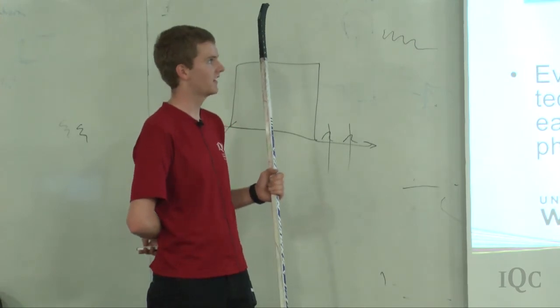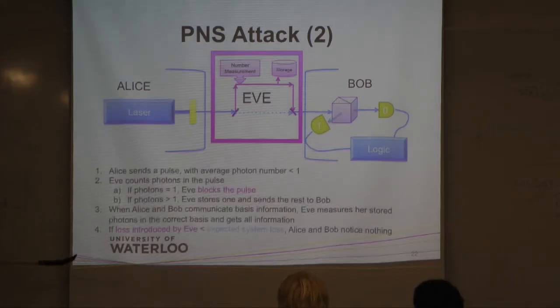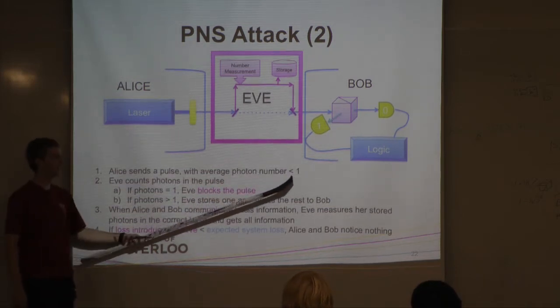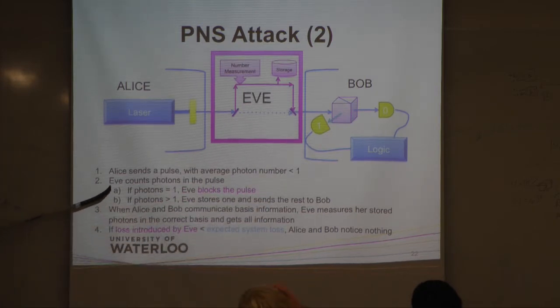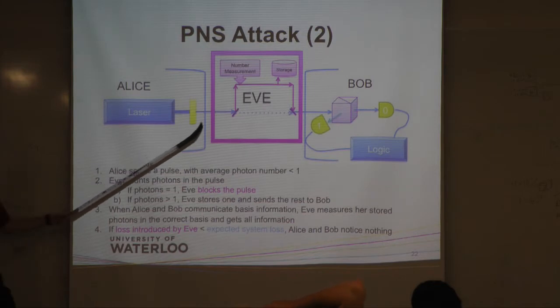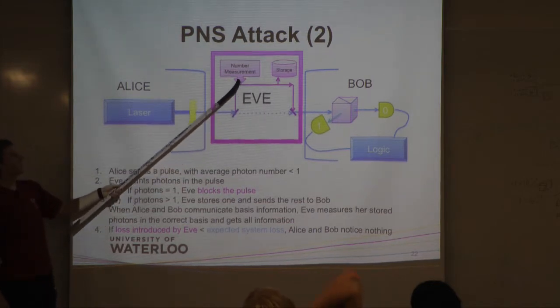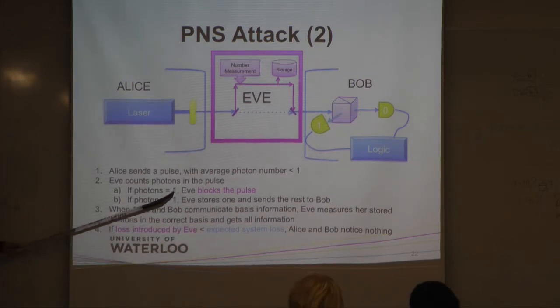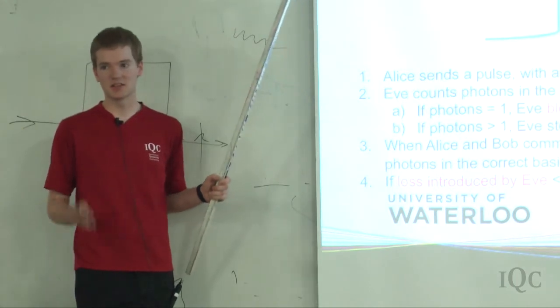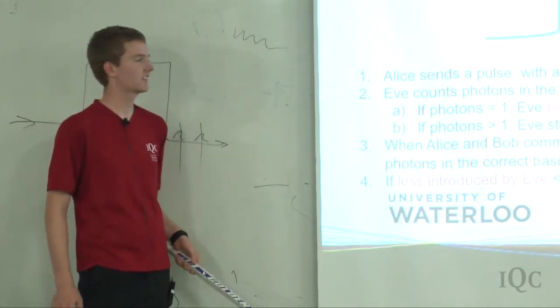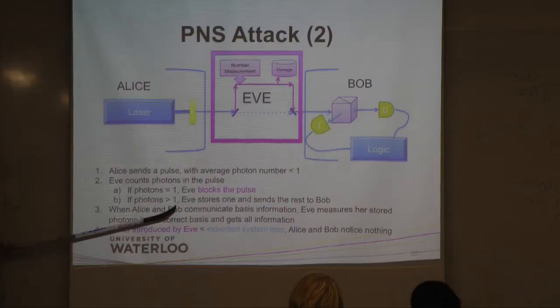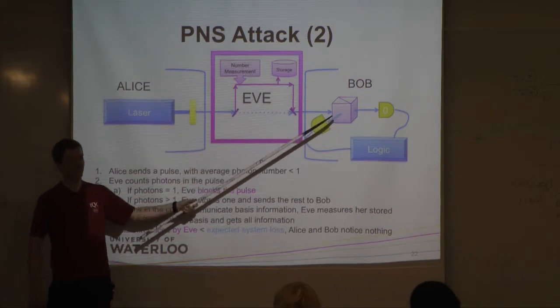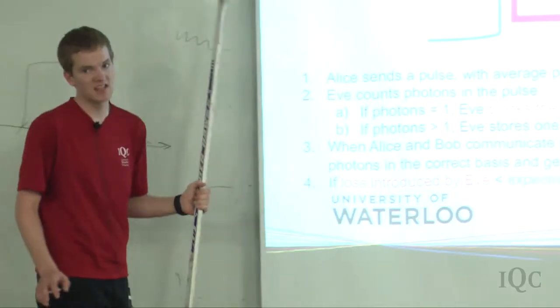So here's the attack. Alice sends some laser pulse out and it has a low average photon number, but there's still always some chance to get at least two. So Eve counts the photons in the pulse. Eve essentially just blocks the channel, takes them all into her lab, and then she measures the number. If there's only one photon, Eve just blocks it. She can't get any information, so she stops the pulse right there. And Alice and Bob just think it's loss. Then if there's more than one photon, Eve splits one of them off, keeps it in her little storage device, and sends the rest on to Bob. So Bob can get these photons, measure them. He doesn't think anything's wrong.